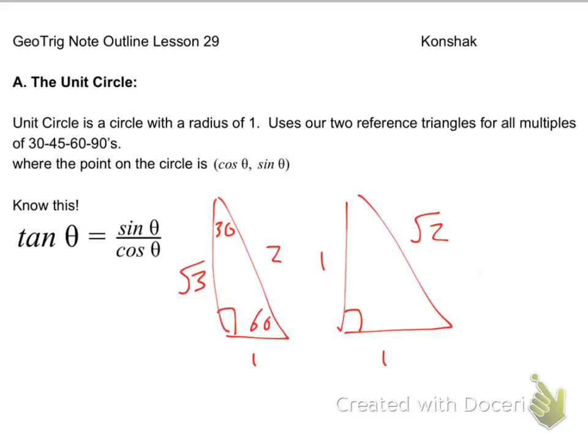We have one, one, and square root of 2 - those two triangles we've been using extensively for several lessons now. The difference between these reference triangles and what we call the unit circle is that the unit circle has a radius of 1. We're going to use the two triangles for all multiples of 30, 45, 60, and the 90s.